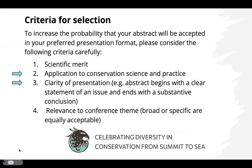What are the criteria for selection? The scientific committee is trying their best to include as many people as possible. There are four areas assessed: scientific merit, application to conservation science and practice, clarity, and relevance to the theme. Scientific merit really means: is this adding something to the field? It's very broad — there are many fields and many ways we do conservation work.